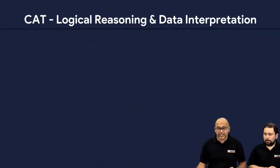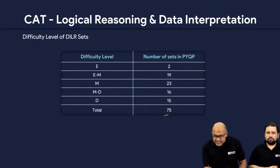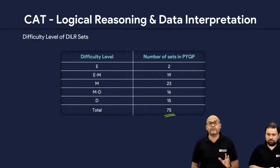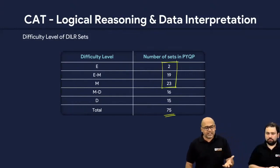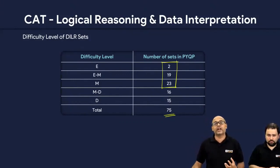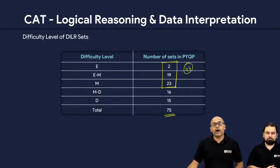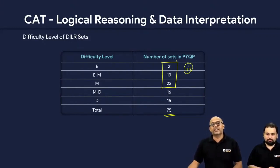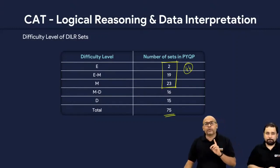Looking at the difficulty level, there are totally 75 sets that we analyzed. If I take only the moderate ones — easy to moderate — which are the ones you should be able to pick and do in the exam, you have almost 44 out of 75. That's about 60%, meaning more than half the paper over the last five years was doable.